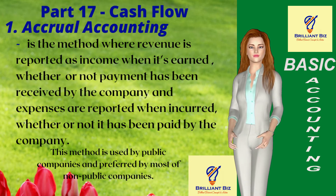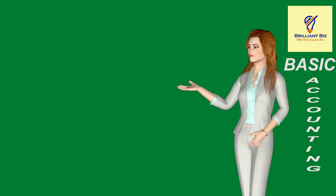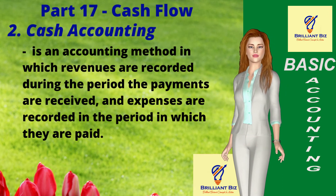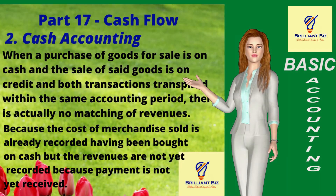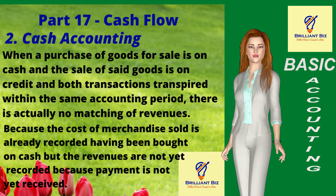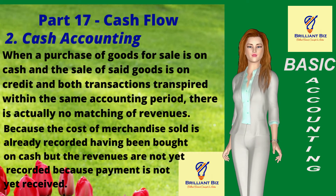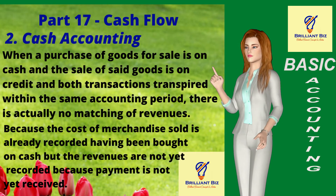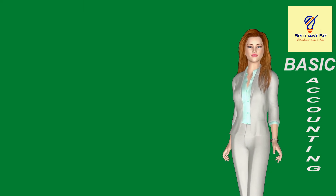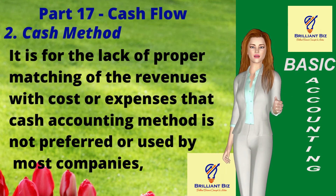Accrual accounting is used by public companies and preferred by most non-public companies. Cash accounting is a method in which revenues are recorded during the period the payments are received, and expenses are recorded in the period in which they are paid. When the purchase of goods is on cash and the sale is on credit within the same accounting period, there is no matching of revenues, because the cost is already recorded but revenues are not yet received. This is why cash accounting is not preferred by most companies.